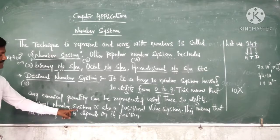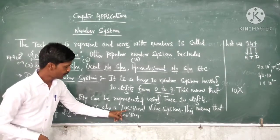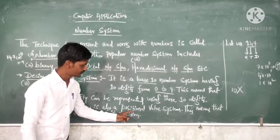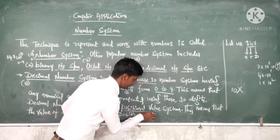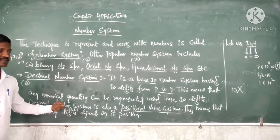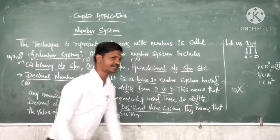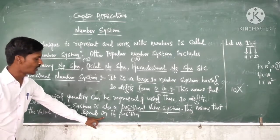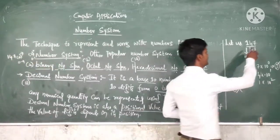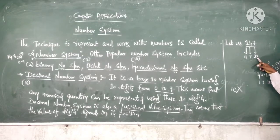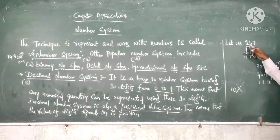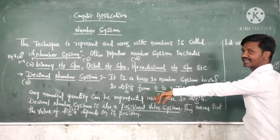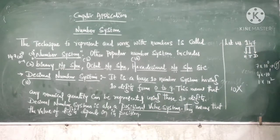One more thing: the decimal number system is also a positional value system. The value of digits — whatever digits you specify — depends on their position. That's why 7 is in the units position, 4 is present in tens, and 1 is present in hundreds.